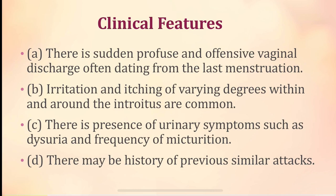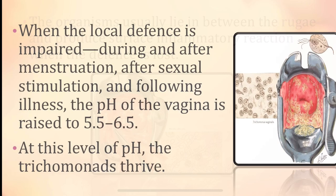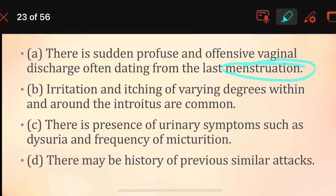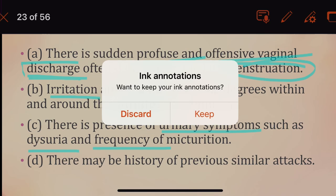The clinical features: a patient with trichomonas vaginitis will have a sudden, profuse, and offensive vaginal discharge dating from the last menstruation. Irritation and itching will be present in varying degree around the introitus. Urinary symptoms include dysuria and altered frequency of micturition, and there will be a history of previous similar attacks related to menses.